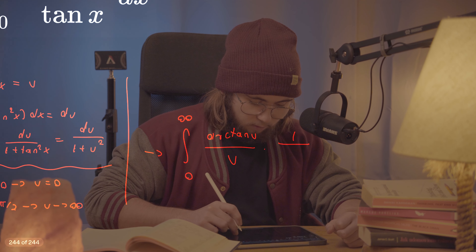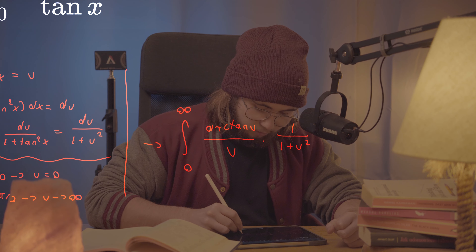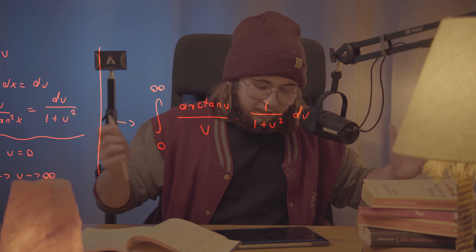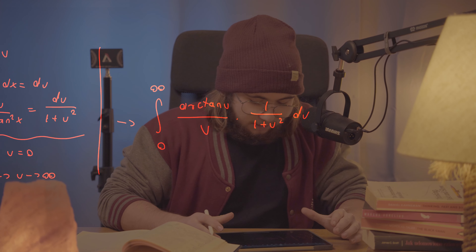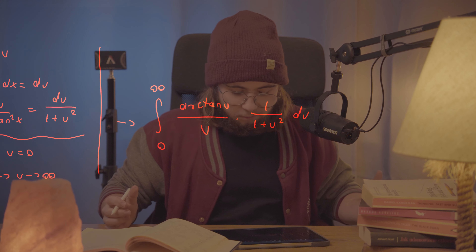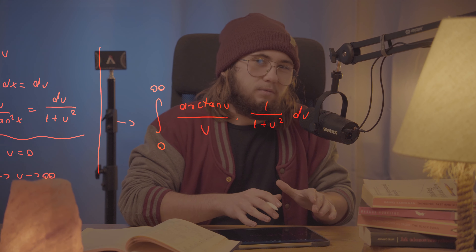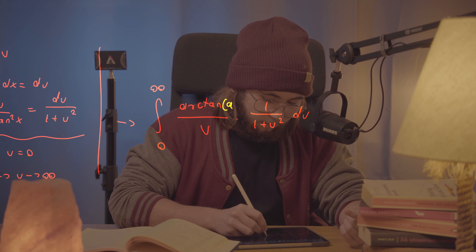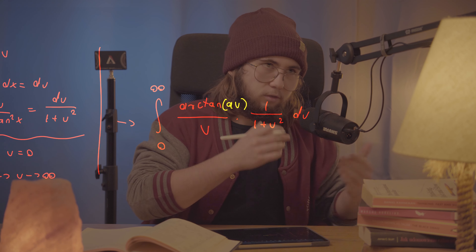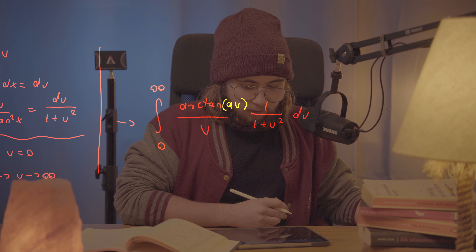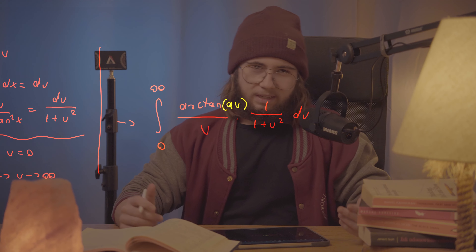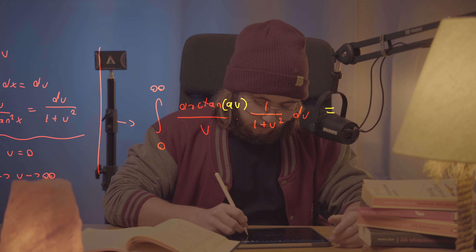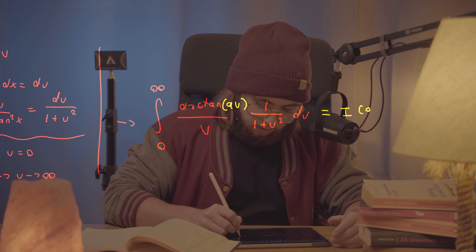For the bounds: when x = 0, tan(0) = 0 so u = 0. When x approaches π/2, tan(x) tends to infinity, so u → ∞. After substitution, the integral becomes the integral from 0 to ∞ of arctan(u) / u times 1/(1 + u²) du.